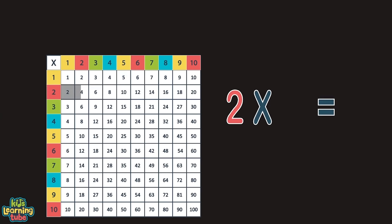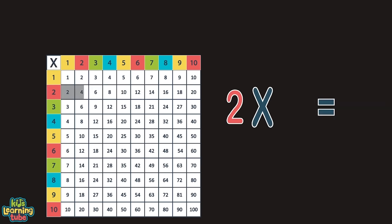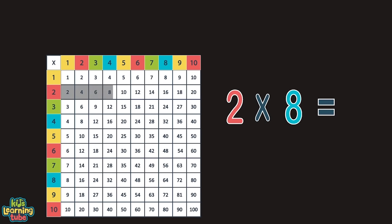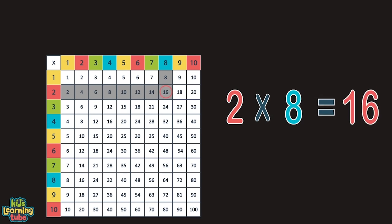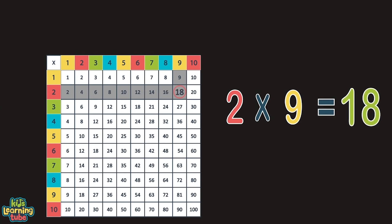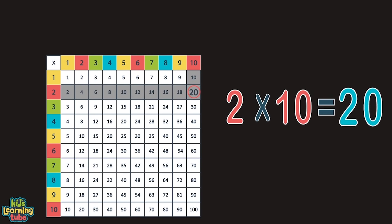And two times six equals twelve here and then. Two times seven does equal fourteen. And two times eight equals sixteen on the scene. Two times nine equals eighteen. And two times ten equals twenty again.